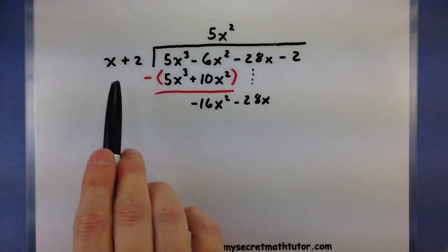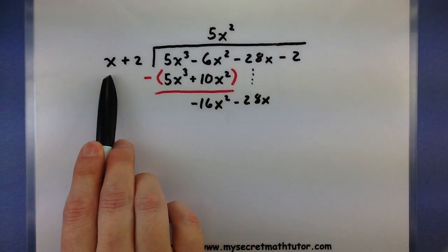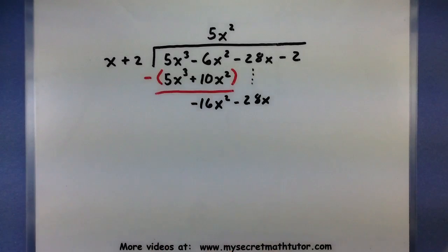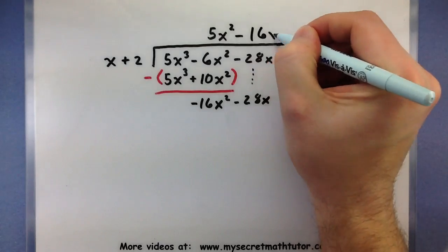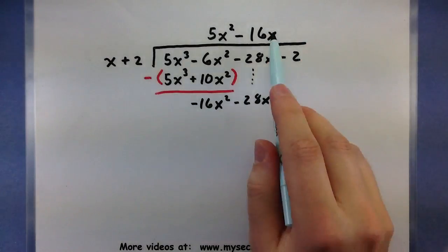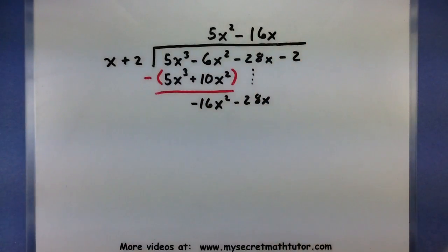So again, I want to look at my first two terms and figure out, what would I have to multiply x by in order to get a -16x²? So I'd have to multiply by a -16x. Now we'll take this and multiply through by both of the terms.